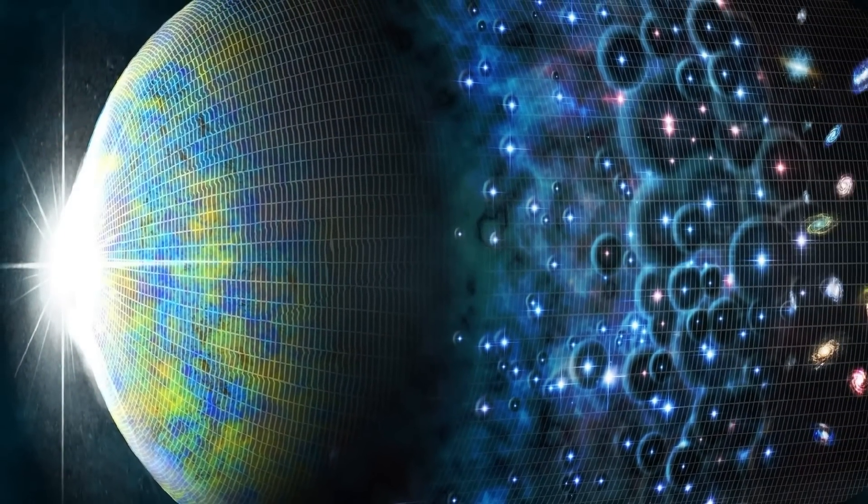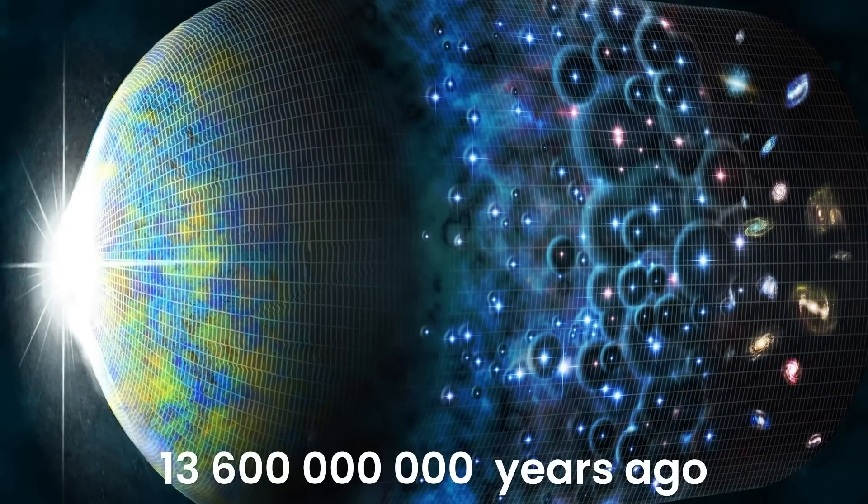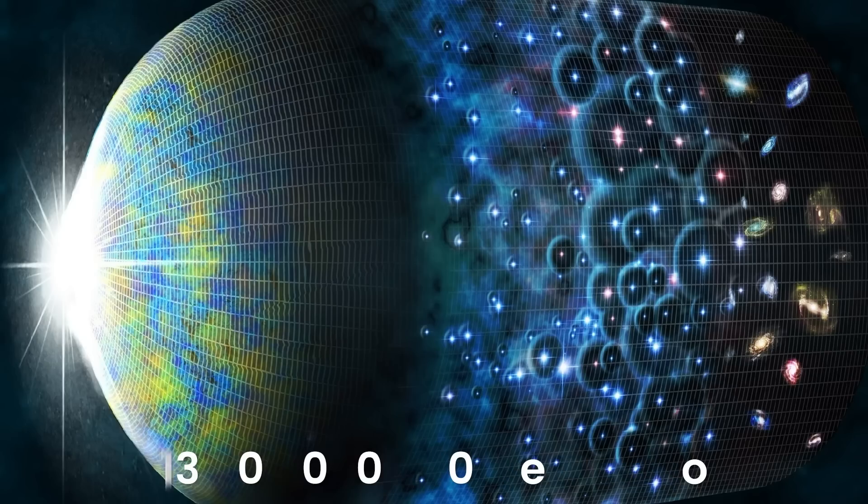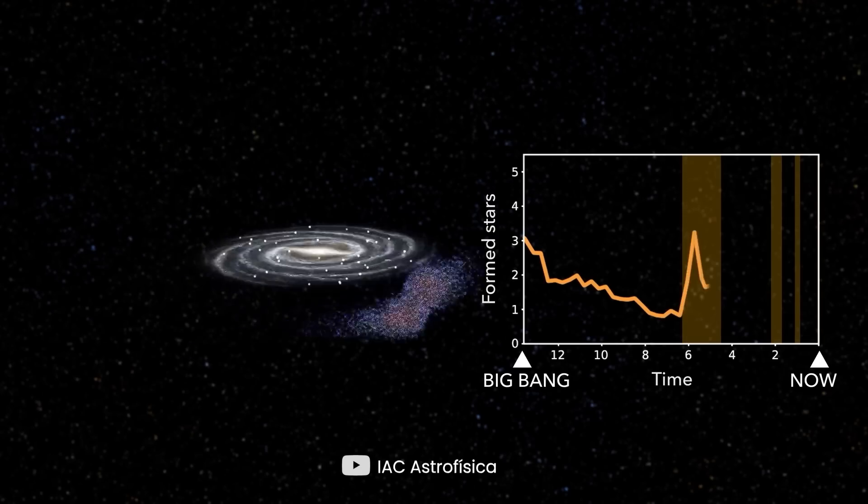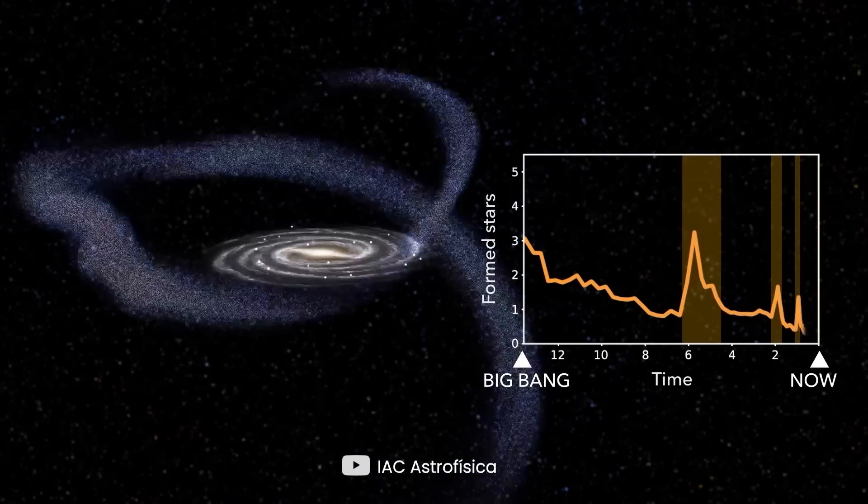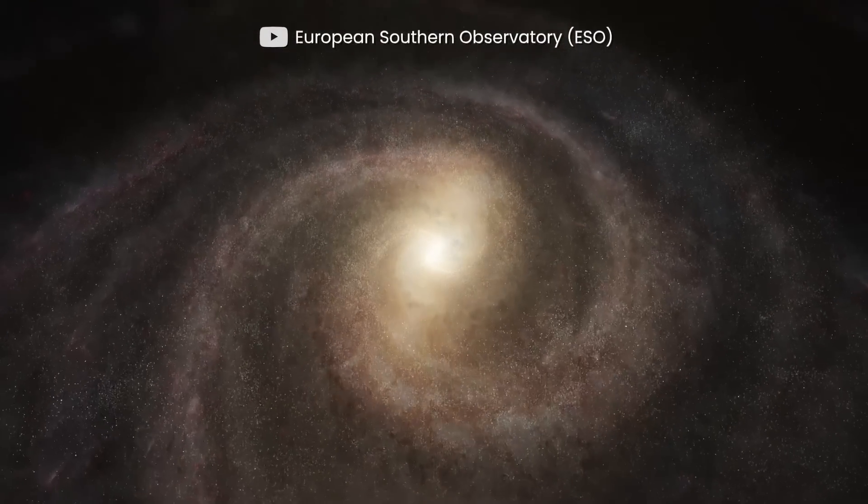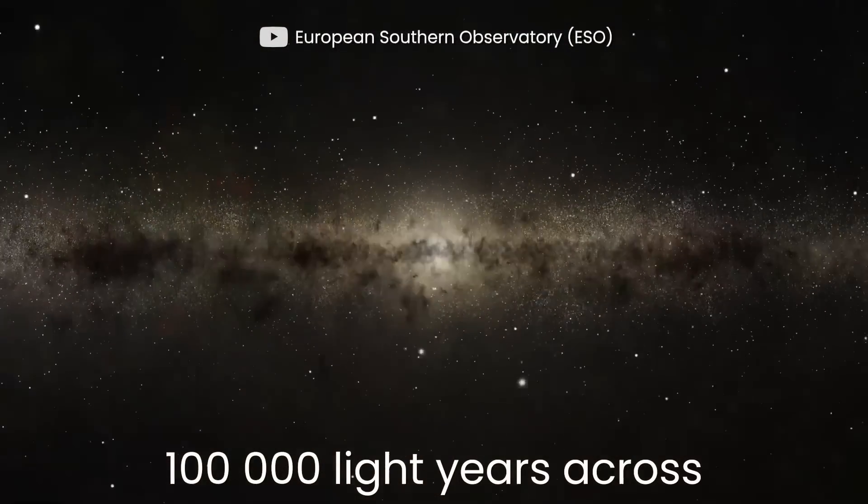Scientists consider the Milky Way to be one of the oldest galaxies in the universe. It formed about 13.6 billion years ago, so it's almost the same age as the universe. To grow and mature, the Milky Way has merged with other galaxies, and it's now colliding with the dwarf galaxy Canis Major. This is how the Milky Way grew to a huge size, amounting to a diameter of 100,000 light years across.